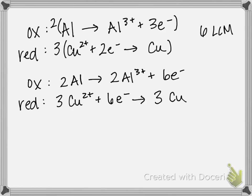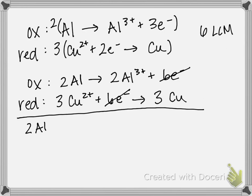Step 6 is to add the two half reactions together. Anything on the same side of the arrow adds together; anything on opposite sides that is identical cancels out. The six electrons appear as a product in oxidation and as a reactant in reduction — they cancel. Cu²⁺ and Cu⁰ are not the same species, so they don't cancel. The combined reaction is: 2Al + 3Cu²⁺ → 2Al³⁺ + 3Cu.